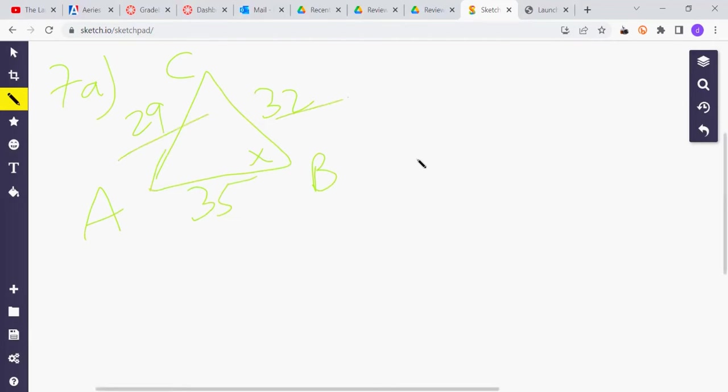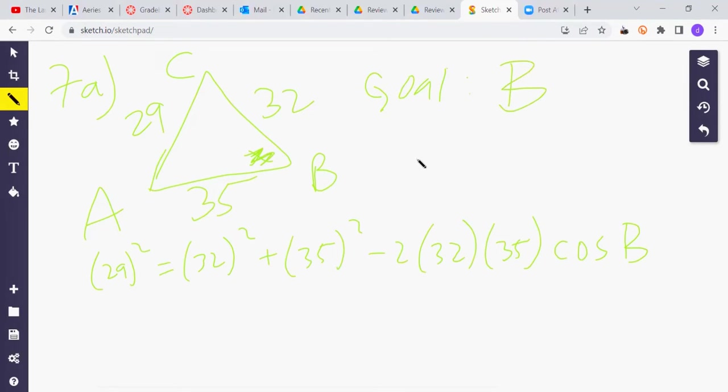So when I have three sides, we can use law of cosines. Use law of cosines that features capital B. And if you do that, here would be your setup. It'll look like 29 squared equals 32 squared plus 35 squared minus 2 times 32 times 35 times the cosine of B, which I happen to call X. The goal is to find angle B.